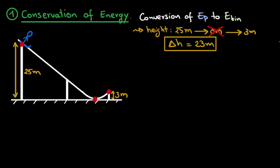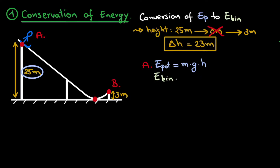We write down both the potential and kinetic energy for point A, where she starts, and point B, where she leaves the ramp. The potential energy in a gravitational field is mass times gravitational constant times height h. At the starting position, h is 25 meters. The kinetic energy is one-half times mass times velocity squared, but in this initial position the ski jumper has no velocity, so kinetic energy is zero. Therefore, the total energy at point A is simply m times g times h.